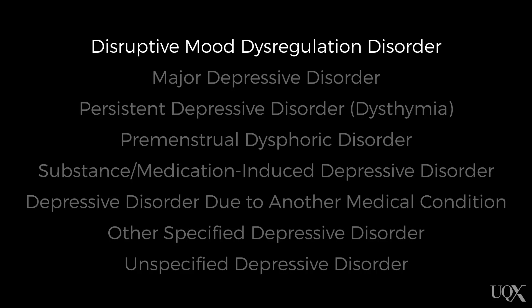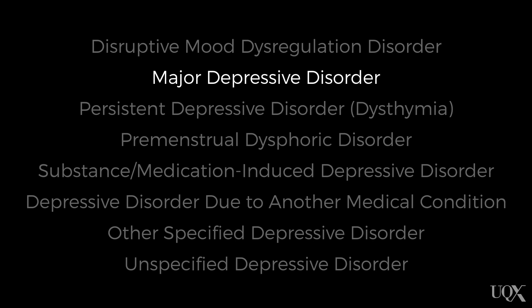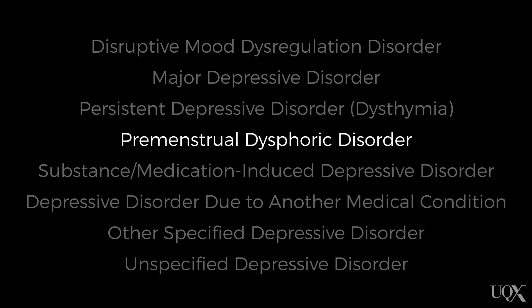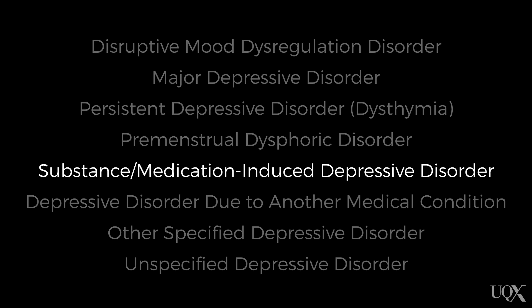In the current version of the Diagnostic and Statistical Manual of Mental Disorders, the DSM-5, there are a number of depressive disorders. These include disruptive mood dysregulation disorder, major depressive disorder, persistent depressive disorder, also known as dysthymia, and premenstrual dysphoric disorder.